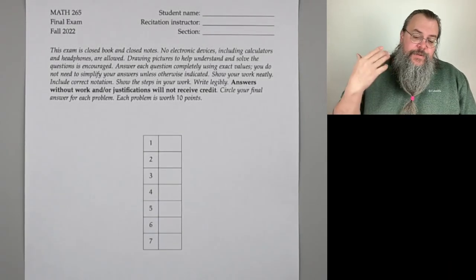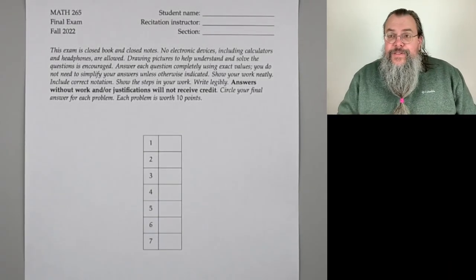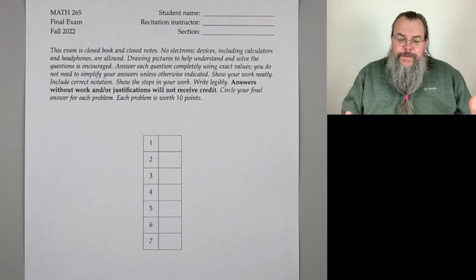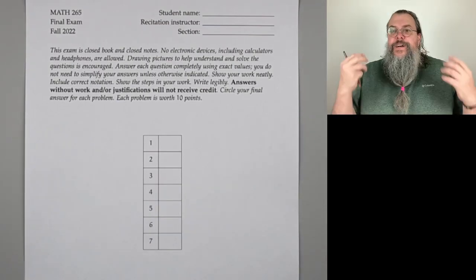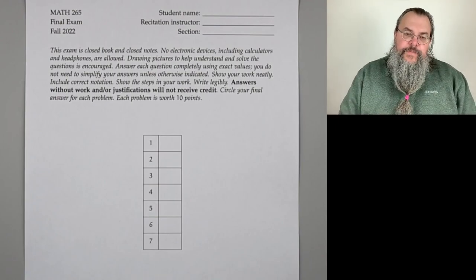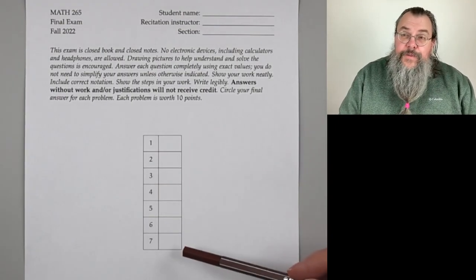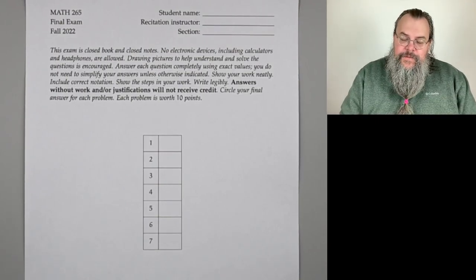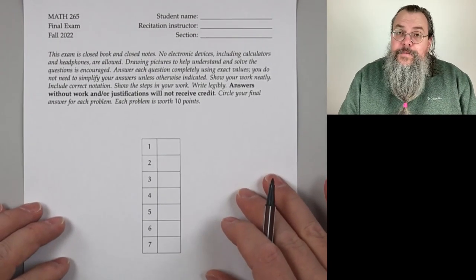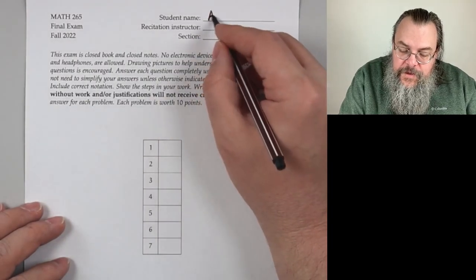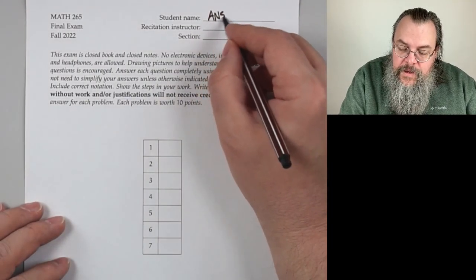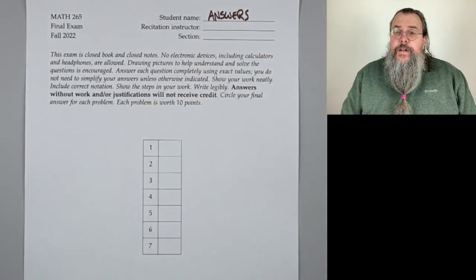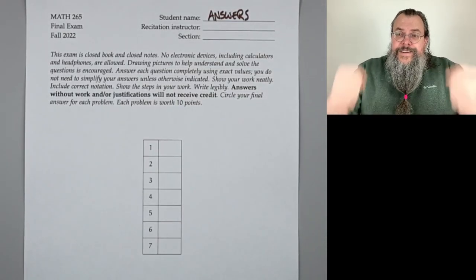Another final exam, and this one is from Math 265, also known as multivariable calculus. Final exam from fall 2022. I know it looks like there's seven problems, but don't worry — there's eight, and it's going to be good times. Of course, we start by putting down our name, because if we don't write our name, we're not going to get the credit. We can do this. Fighting!